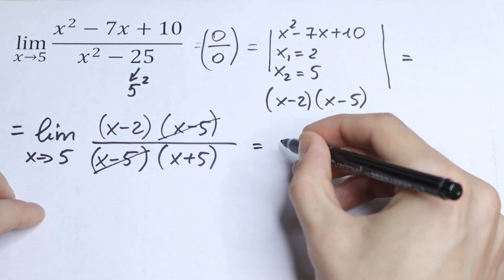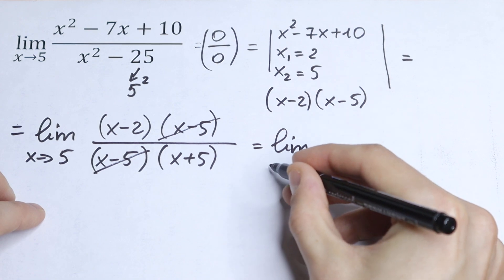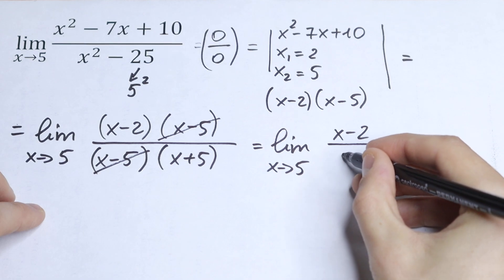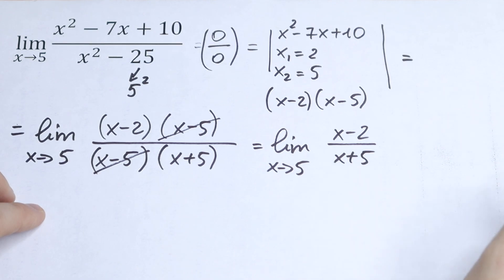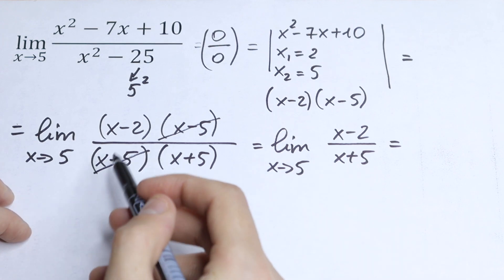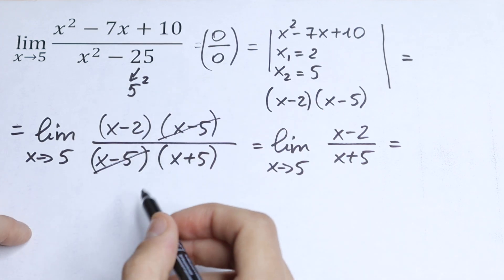As a result, we have the limit as x approaches 5 of (x minus 2) over (x plus 5). Now it's a good moment to use direct substitution because we canceled the expressions that give us an undefined answer.